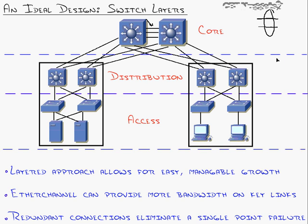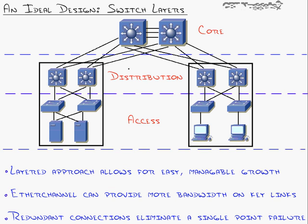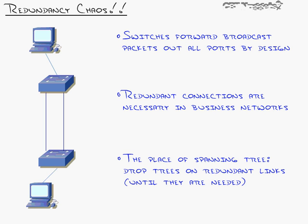The last key point about this ideal design is the redundant connections, which eliminate a single point of failure. In the access layer, there is always a cable going to both distribution layer switches, and the distribution layer always has a cable going to both core layer switches, so if any one device fails, there's a backup path. Redundancy is good — but unless you design it the right way, redundancy can be very bad. To understand why, you have to understand how switches treat those redundant links.